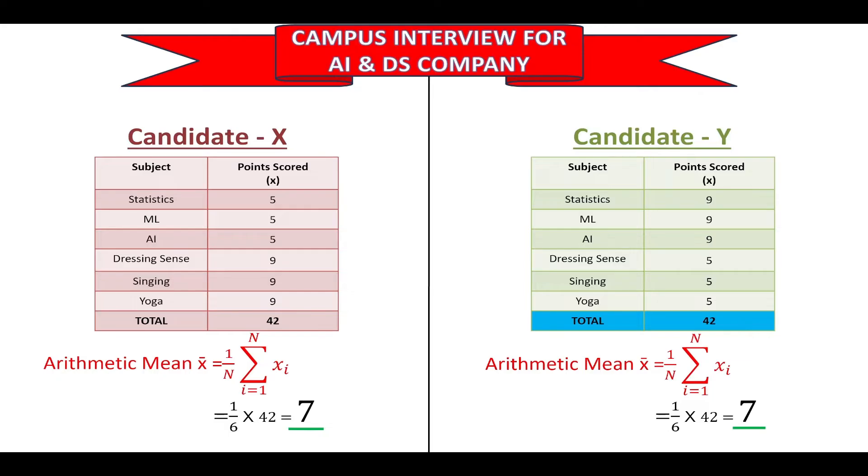In Weighted Arithmetic Mean, weights are attached to each item proportional to its importance, unlike Arithmetic Mean where we suppose that all the items in the distribution have equal importance.